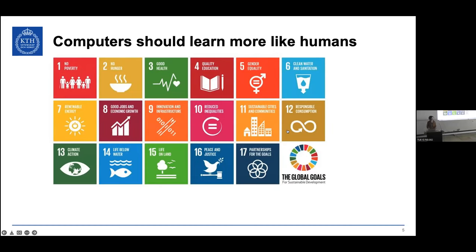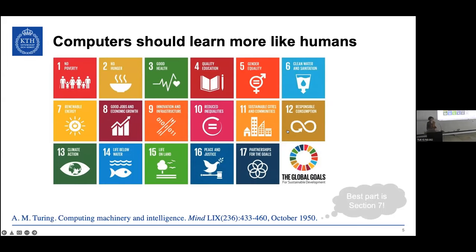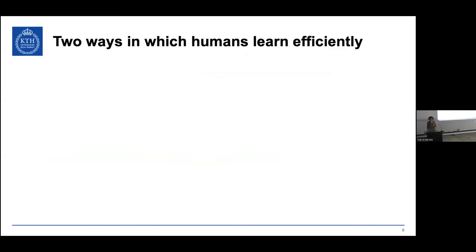Also, a very pragmatic reason: training a deep learning model takes enormous energy resources. For the sake of our climate, we should strive towards making our machine learning models more data efficient. This idea of taking human inspiration was advocated already by Turing.